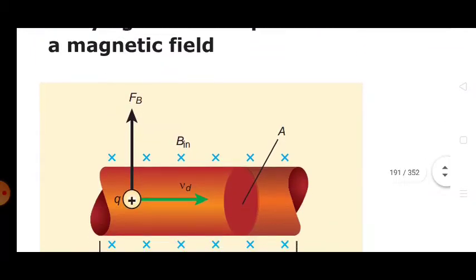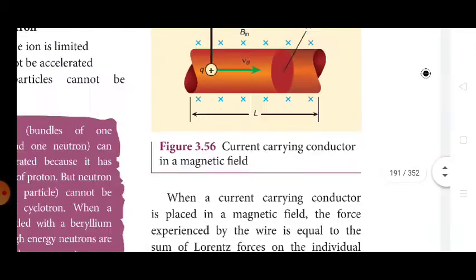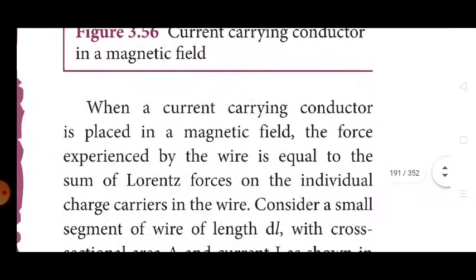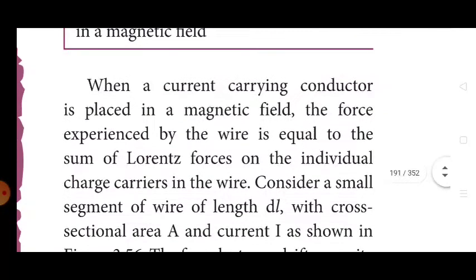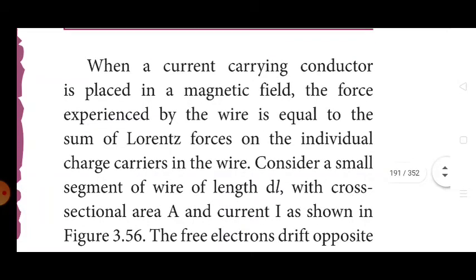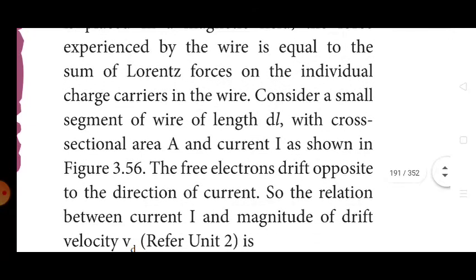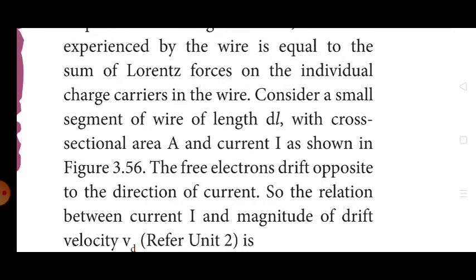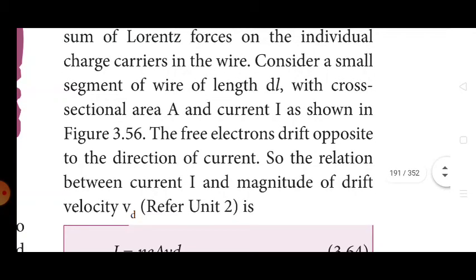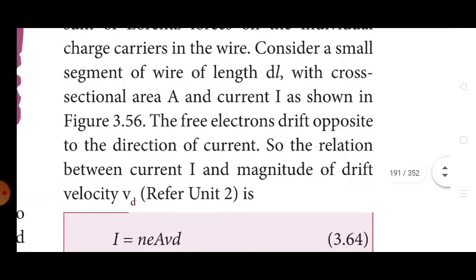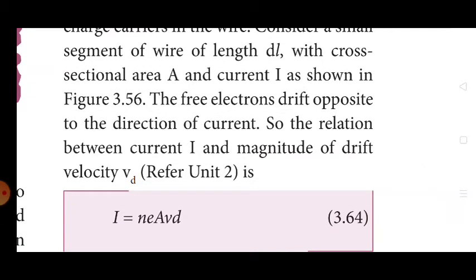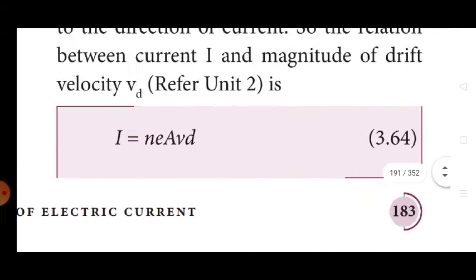See the diagram. When a current carrying conductor is placed in a magnetic field, the force experienced by the wire is equal to the sum of the Lorentz forces on the individual charge carriers in the wire. Consider a small segment of wire of length dL with cross-sectional area A and current I. The free electrons drift opposite to the direction of current.